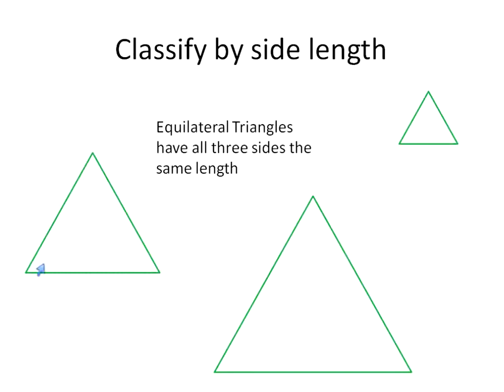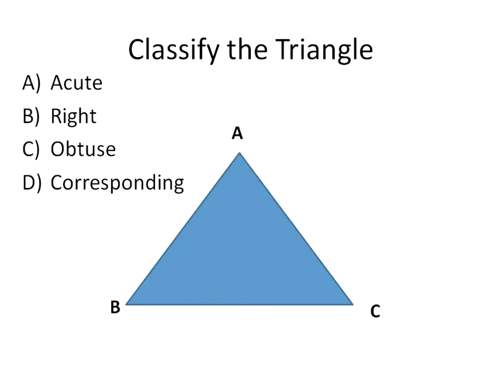All of the angle measurements will also be the same. So it's called not only an equilateral triangle, but it's also called an equiangular and a regular triangle — so that's a really special triangle. But when we're classifying just by the side length, we call it an equilateral triangle.